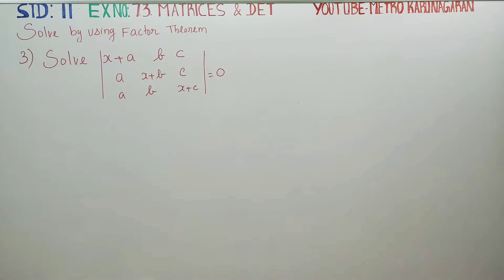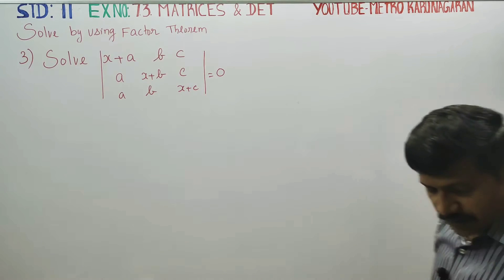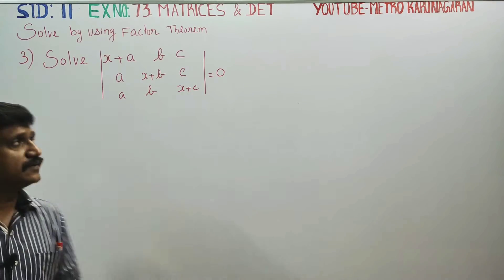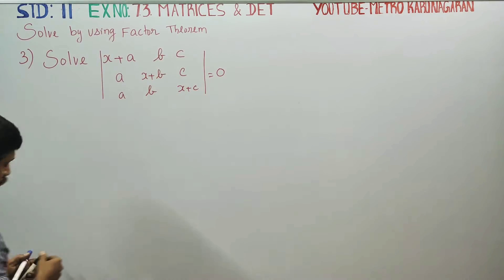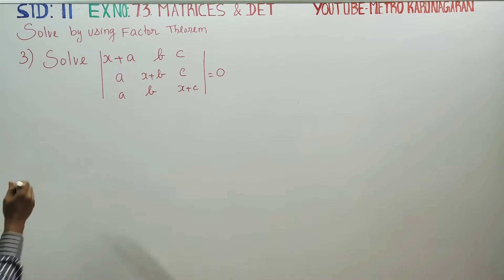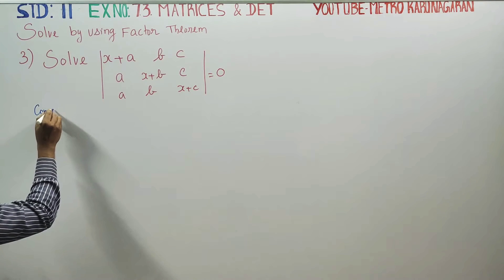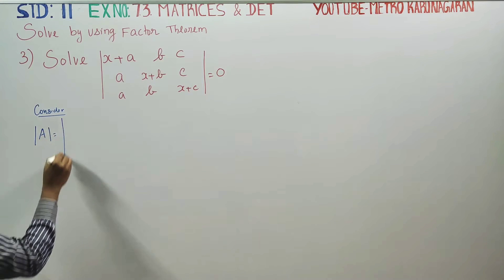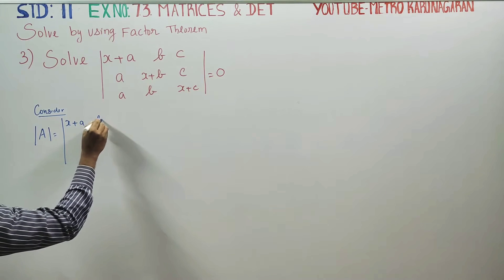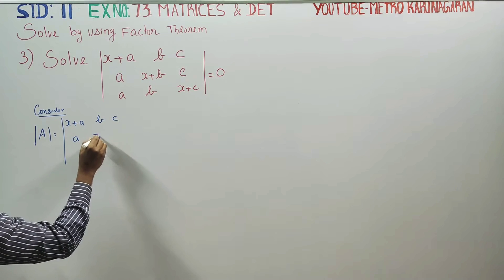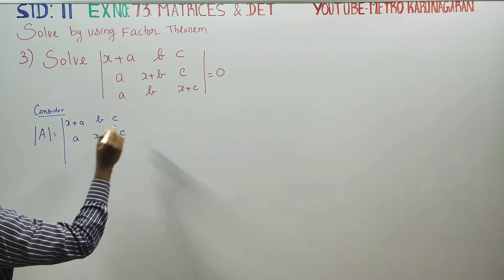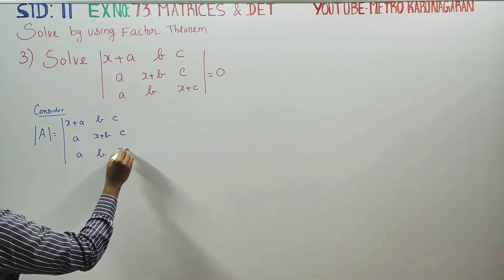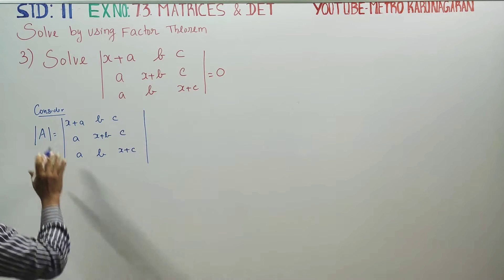For my 11th standard students, in exercise number 7.3, sum number 3, they are asking us to solve this determinant using the factor theorem method. The determinant A is equal to: row 1: (x+a), b, c; row 2: a, (x+b), c; row 3: a, b, (x+c). That is the determinant value we need to solve.